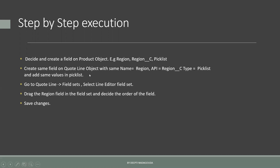Now create the same field on the quote line object. When we talk about twin fields, we create the exact same field on the compatible object. Here, product and quote line are compatible objects. So we create the same field with the same name, same API name and type, and we also add the same values in the picklist. Once these two fields are created on product and quote line, we go to the quote line field sets, select the Line Editor field set, and drag and drop the Region field onto it. We can decide the order wherever we want, then save the changes.